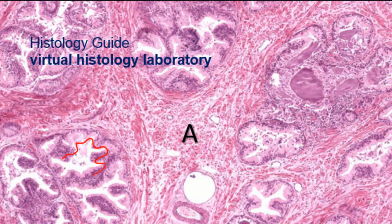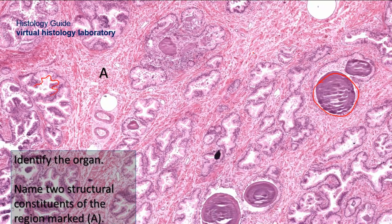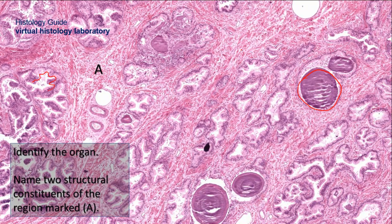The stroma present here is a fibromuscular stroma. It consists of dense collagen, fibroblasts, and also irregularly arranged smooth muscle fibers.